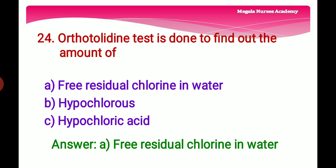Twenty-fourth question: The Orthotoluidine test is done to find out the amount of — Option A: Free residual chlorine in water. Option B: Hypochlorous. Option C: Hypochloric acid. The right answer is Option A, free residual chlorine in water. 0.1 ml of orthotoluidine solution is added to water; the color formed after 5 minutes indicates chlorine presence — more yellow color indicates greater chlorine residual.